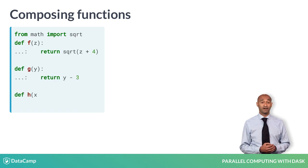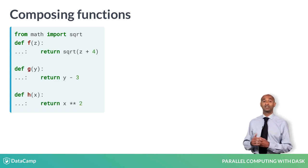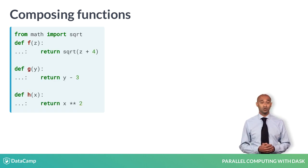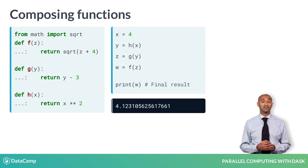We define three ordinary functions, F, G and H, with the def keyword as usual. Each takes a single numerical input and returns a single numerical output. We then perform a sequence of computations assigning intermediate computations to X, Y, Z and the final result, W.